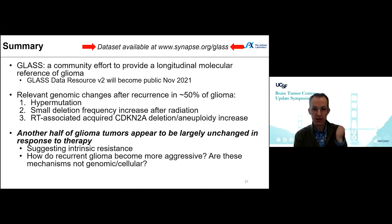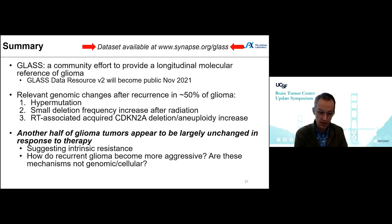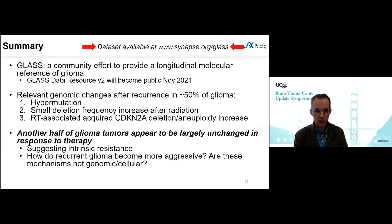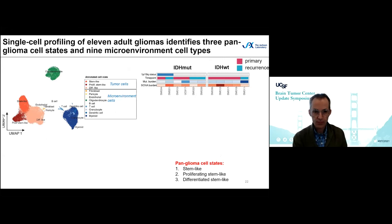To conclude the first part: GLASS is a community effort with much participation from UCSF to provide a longitudinal molecular reference of glioma, and our second release will become public in November. We measure relevant genomic changes after recurrence in about half of gliomas — this is hypermutation. We're adding to this a small deletion frequency increase after radiation, which in concept and consequence is very similar to hypermutation. We also see radiotherapy-associated acquired CDKN2A deletions as well as aneuploidy. The other half of glioma tumors appears largely unchanged in response to therapy, suggesting intrinsic resistance.